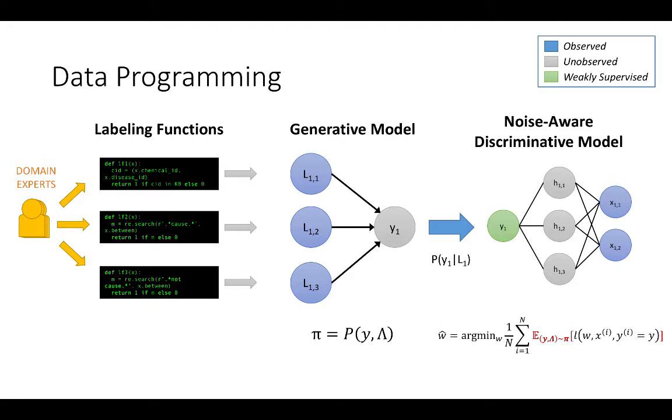In other words, we minimize the expected loss with respect to the generative model's predictions. Crucially, both modeling phases are needed for optimal end-performance.